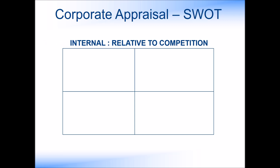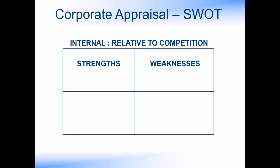The strengths and weaknesses are internal and are said to be relative to the competition. A strength is something that you are better at than your competitors, so you can use this to gain competitive advantage. Similarly, a weakness is something where the competitors are better than you and therefore you may be at a competitive disadvantage.